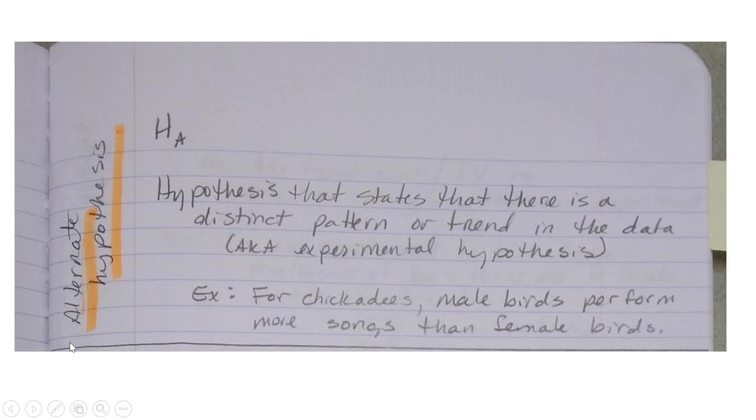The first section is Alternate Hypothesis. Alternate Hypothesis, you can sometimes see that written as a capital H with a subscript A. This is the hypothesis that states that there is a distinct pattern or trend in the data, also known as the Experimental Hypothesis.